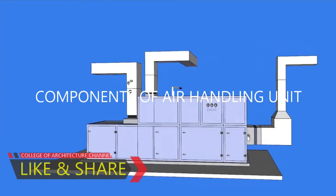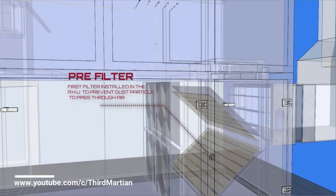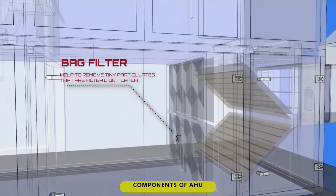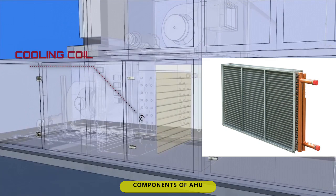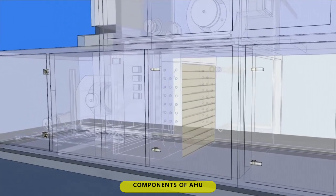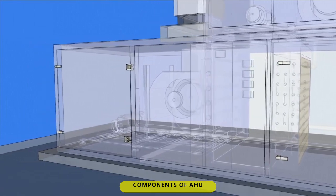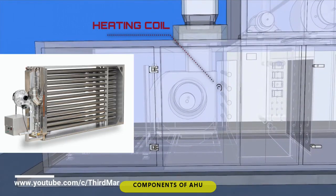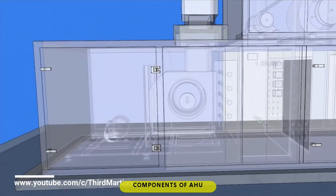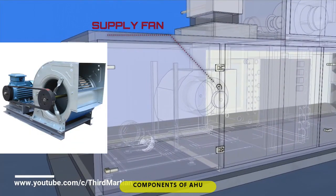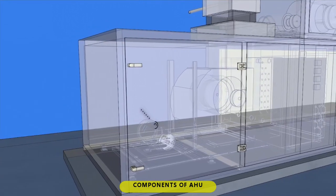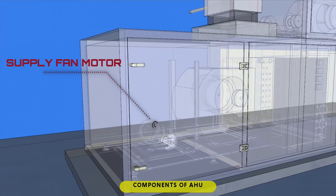Components of Air Handling Unit. 1. Air filter: an apparatus that eliminates air impurities and dust. 2. Cooling coil: an apparatus that absorbs warm air passing through the coils, transfers the heated liquid to the chiller, and provides cold air. 3. Heating coil: an apparatus that absorbs cold air passing through the coils, transfers the cold liquid to the boiler, and provides hot air. 4. Supply fan: an apparatus that pulls or pushes fresh air on the supply air duct. 5. Fan motor: a machine that keeps the supply fan rotating.